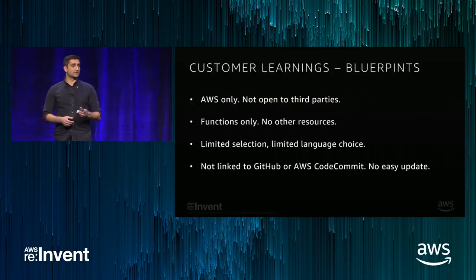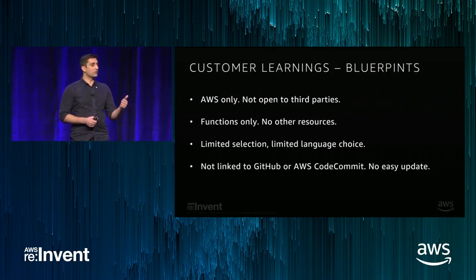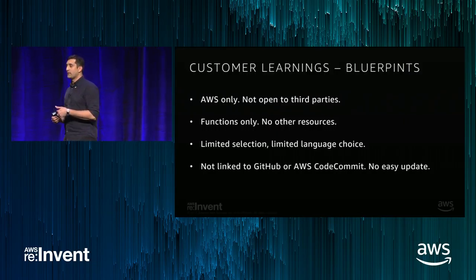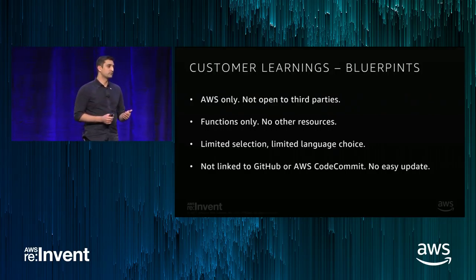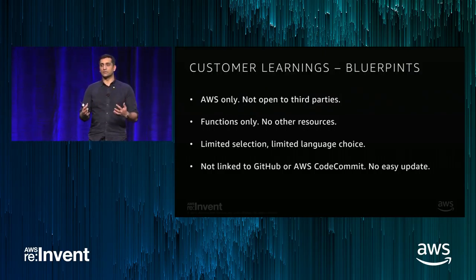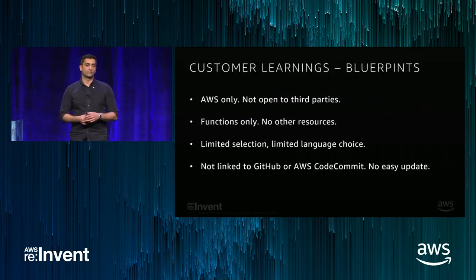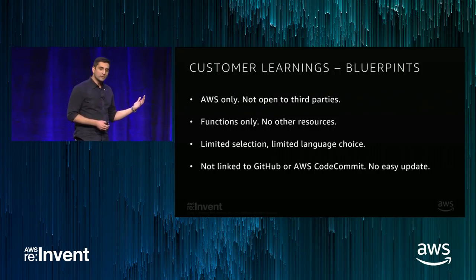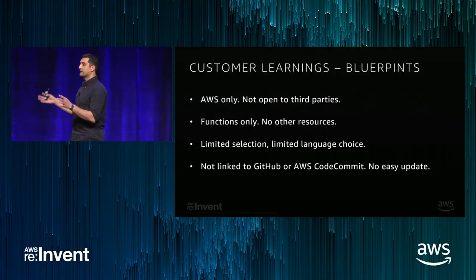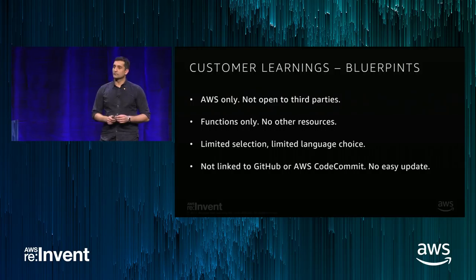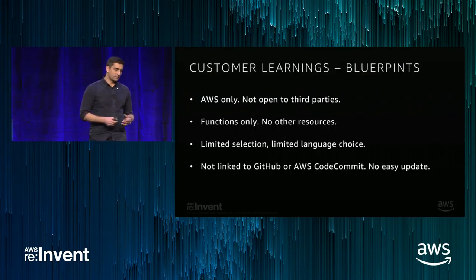A couple of years ago, we launched AWS Lambda Blueprints. Blueprints are great — they're a template for a function that gets customers started for a particular event source on AWS. For example, we have blueprints for quickly reading and writing to S3, and blueprints for Kinesis streams. However, the challenge with blueprints is there's a limited set that AWS produces and curates. These blueprints only create a single function but no other resources, and serverless applications are a lot more than that. Because of the limited selection and languages, customers can't get all the content they really need.